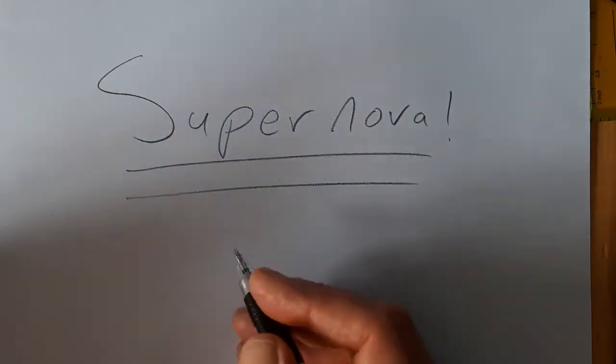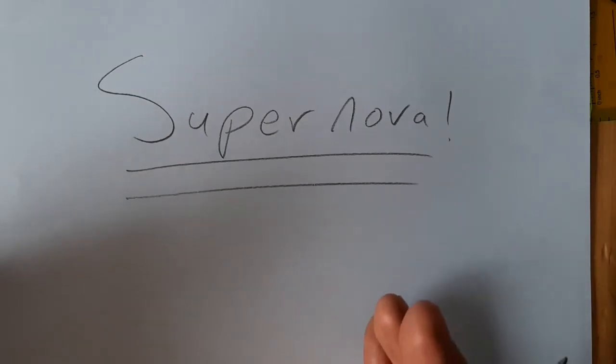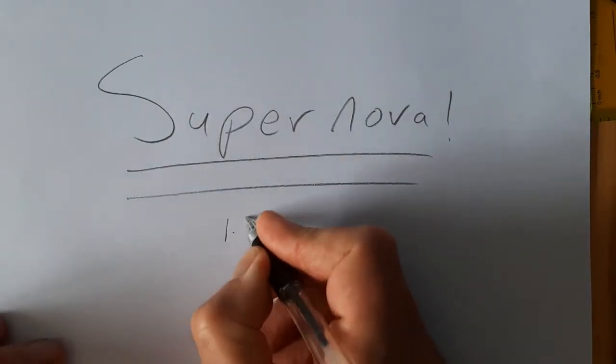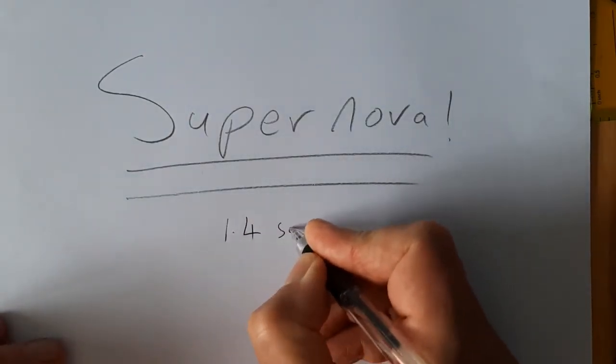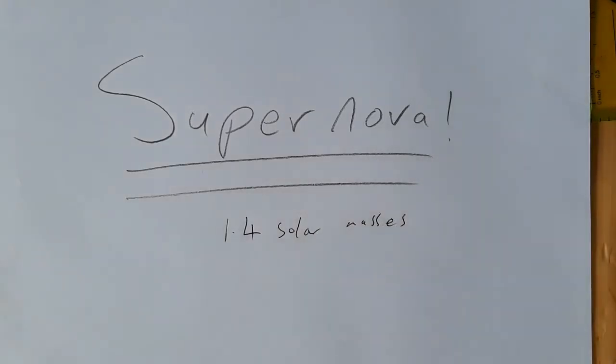Perhaps we have a quick reminder of what a supernova is. At the end of a star's life when the nuclear reactions stop, the main type of supernova occurs if we've got a star of more than 1.4 solar masses, or more strictly if the core has a mass of more than 1.4 solar masses.